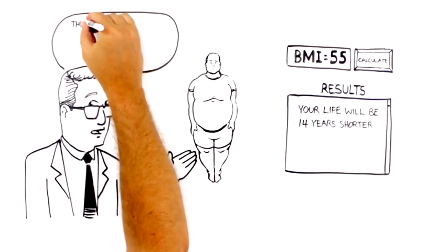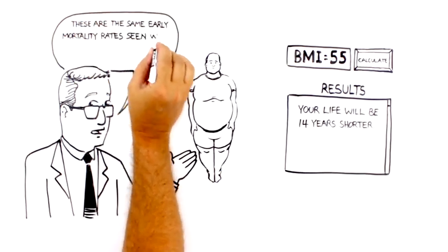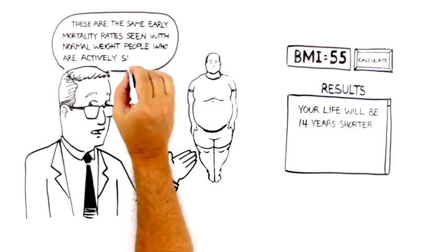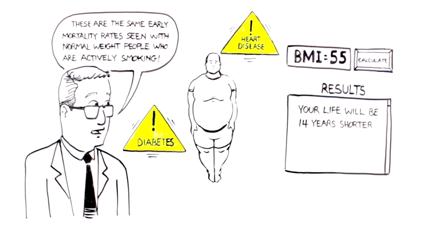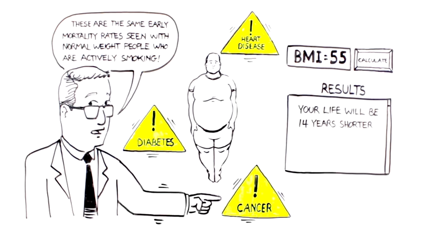For comparison, these are the same early mortality rates seen with normal weight people who are actively smoking. Why do people with obesity die early? Because obesity causes them to develop heart disease, diabetes, and cancer more frequently than non-obese people.